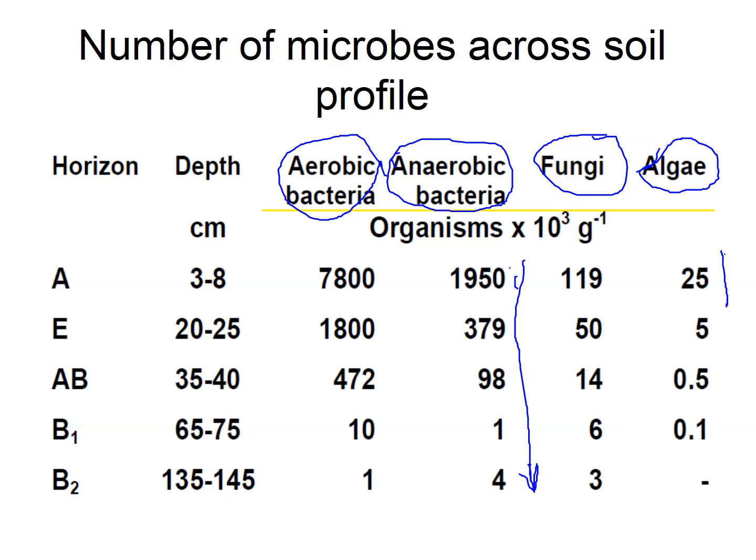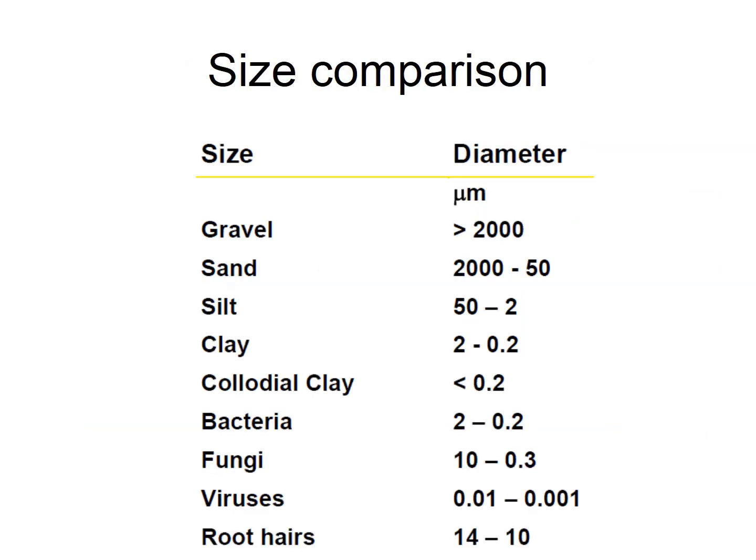In terms of number, bacteria are more dominant. In terms of size, gravel is over 2,000 micrometers, sand ranges from 50 to 2,000 micrometers, silt from 2 to 50 micrometers, and clay from 0.2 to 2 micrometers. This is notably close to bacterial size, as many bacteria range within 0.2 to 2 micrometers. The cellular organization for fungi is a little bit different — fungi are eukaryotes and therefore the cell is a bit larger. The smallest of all are viruses.